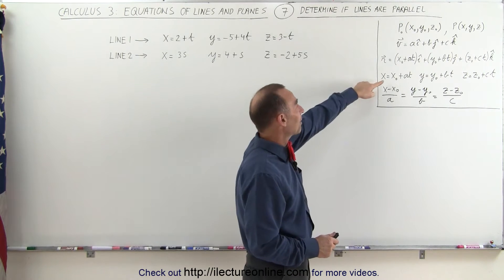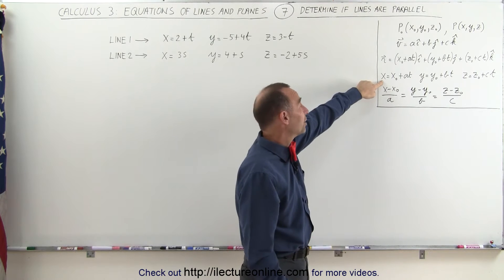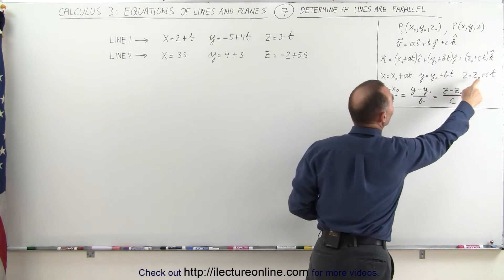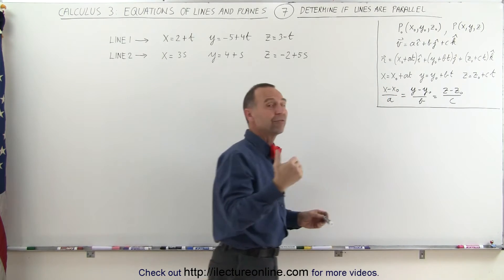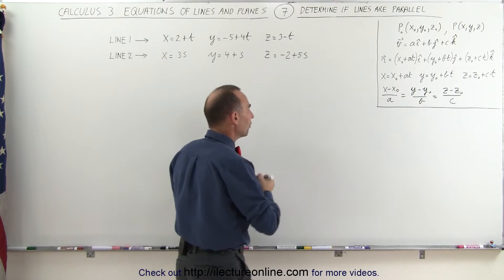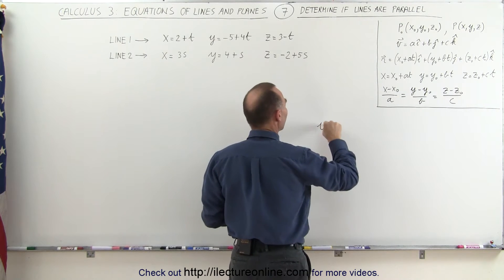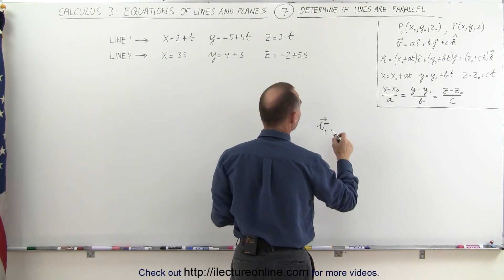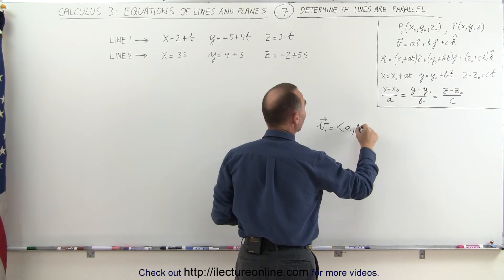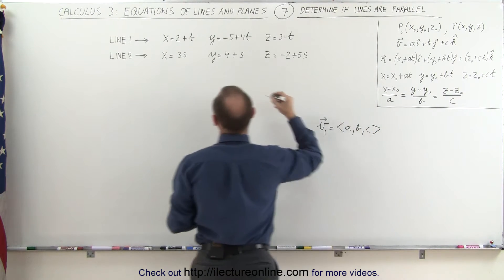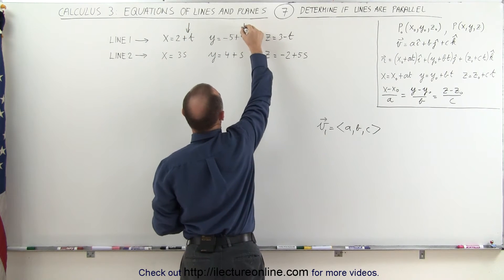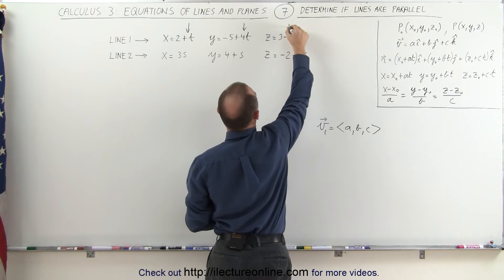Notice that here we have the general equation of the parametric equations of the line. Notice that A, B, and C are the coefficients of the vector that's parallel to that line. In other words, the vector V1 would be the vector that's parallel to line 1, and V1 can be found by finding A, B, and C, which are these components right here, the coefficients in front of the T: 1, 4, and negative 1.